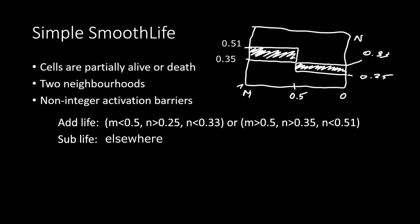I'd like to pick out one of the values for which life is added. For example, the cell increases its life value if the inner density is less than 0.5 and the outer density is between 0.25 and 0.33.